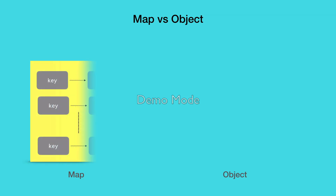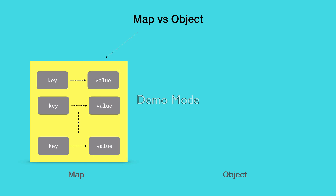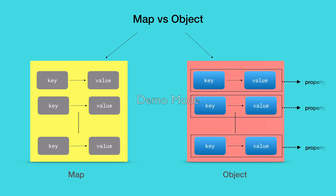Map is a part of keyed collection in JavaScript, which means that this data structure holds data in the form of a key and a corresponding value. Whereas an object is a collection of properties where every property also consists of a key and a value. If both of them hold key-value pairs, then what's the difference? There are a few. Let's go over them.